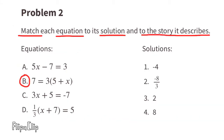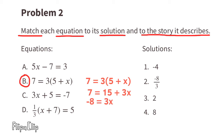Equation b: 7 equals 3 times 5 plus x. We can rewrite that as 7 equals 15 plus 3x. Next, we subtract 15 from both sides, leaving us with negative 8 equals 3x. Finally, we divide both sides by 3, giving us x equals negative 8 thirds.